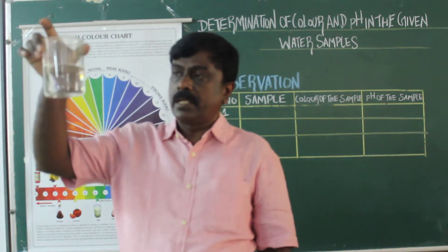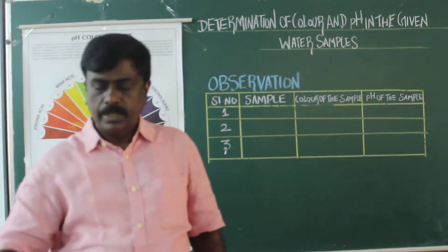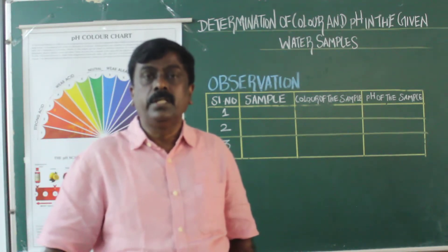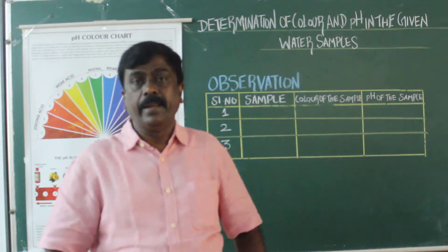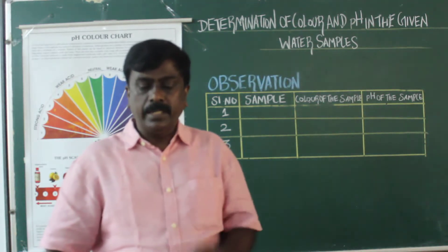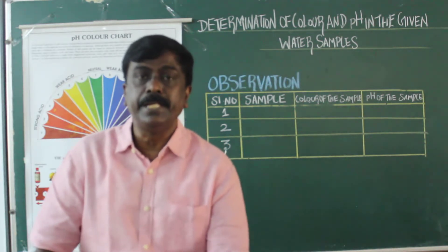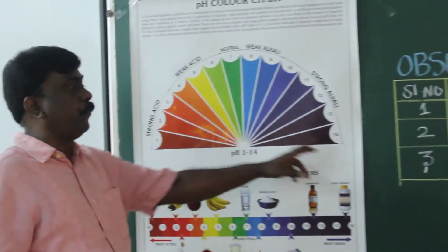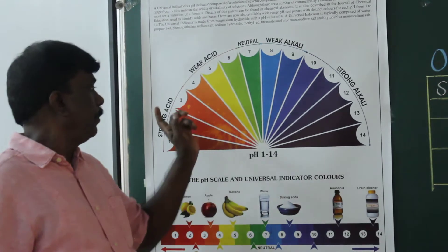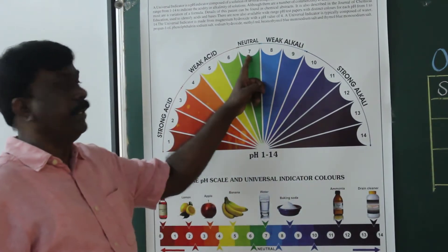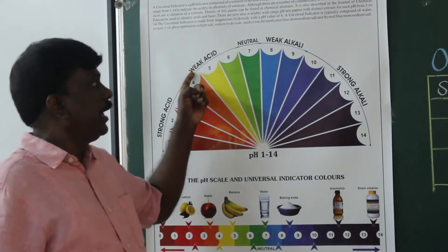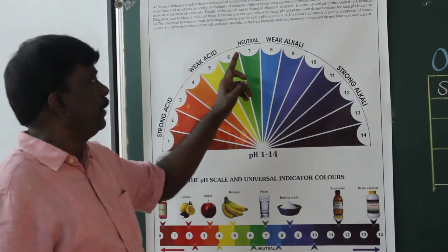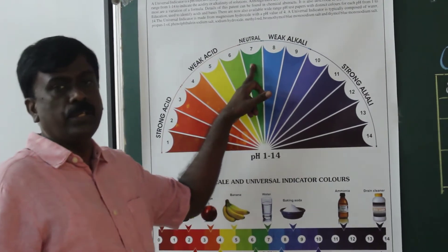Now regarding the principle: the color of the solution ranges from colorless to green-yellow depending on the planktonic growth and sediments present. From the pH chart you can see values from 1 to 14. pH 1 to 7 is acidic, 7 to 14 is alkaline, and pH 7 is neutral.